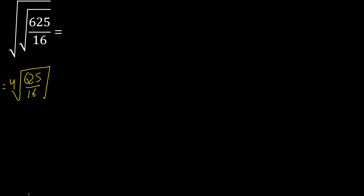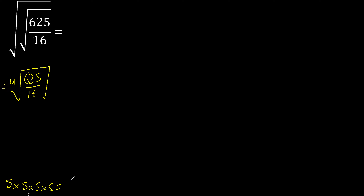4, therefore 4 equals numbers that multiply — first, 625. 4 equals numbers: 5 multiplied by 5 is 25, multiplied by 25 is 625. 5 equals, therefore is 5.